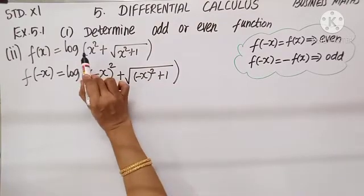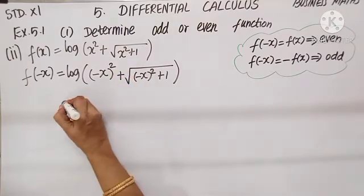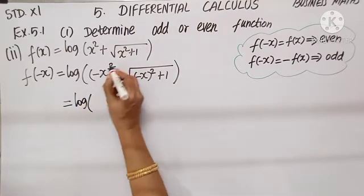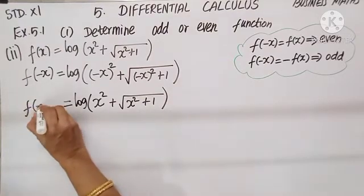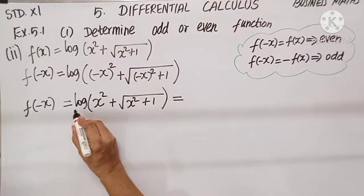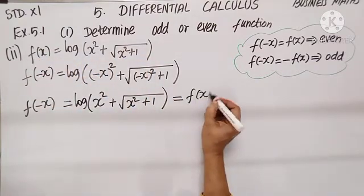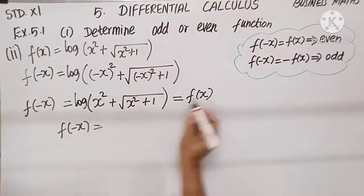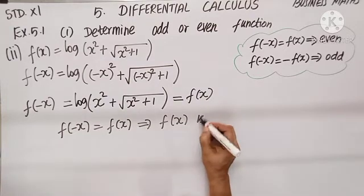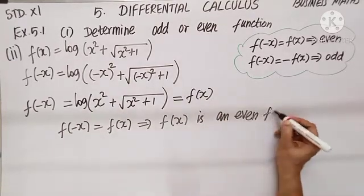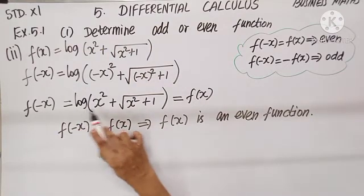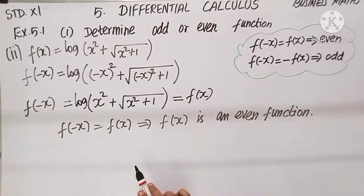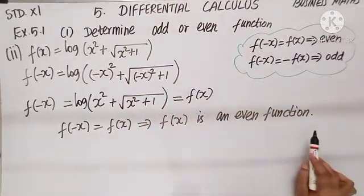We do not alter the plus 1, root, or log. We only change x to minus x. As I simplify, (-x)² = x², and (-x)² + 1 = x² + 1. We started with f(-x), but this gives us the same as the given f(x). So f(-x) = f(x), which implies f(x) is an even function. Generally, if a problem contains only even powers of x, it will definitely be an even function.